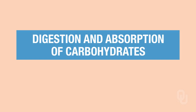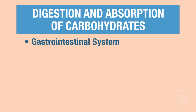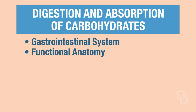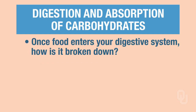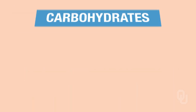In this lecture video, we are going to focus on digestion and absorption of carbohydrates. We're working with the gastrointestinal system but focusing on carbohydrates. So far we've provided an overview of the gastrointestinal system and its processes, the functional anatomy, the major organs and the accessory organs. Now we're going to discuss, once that food enters into your digestive system or GI system, how is it broken down, and how are those nutrients absorbed into the blood? The focus once again is going to be on carbohydrates.